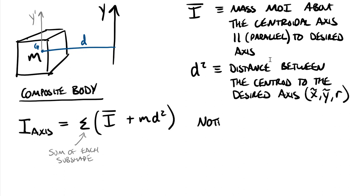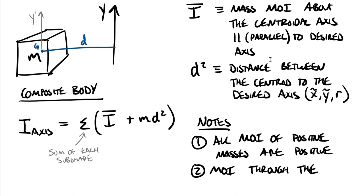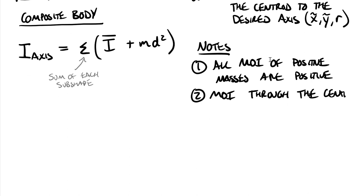A couple of notes: first, all moments of inertia of positive masses are positive — we discussed this with distance squared and mass. Second, the moment of inertia through the centroid is the smallest possible. You can't get smaller than the moment of inertia through the centroid; it only gets bigger as you move to other axes.